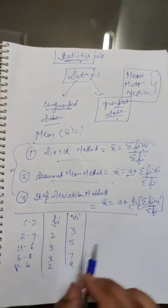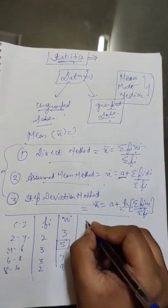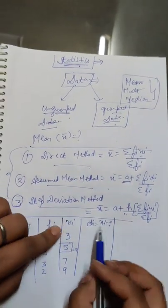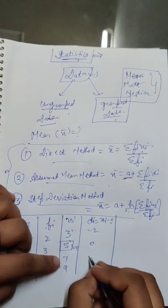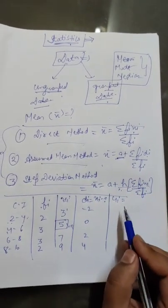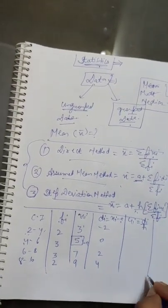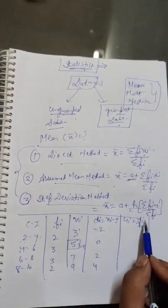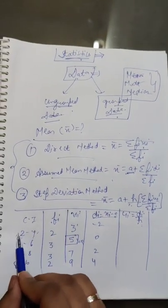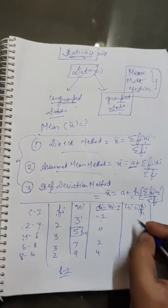We have to choose an assumed value. We will suppose the assumed value a = 5. Now we find dᵢ = xᵢ − a. So: 3 − 5 = −2, 5 − 5 = 0, 7 − 5 = 2, and 9 − 5 = 4. The class size h = upper limit − lower limit = 4 − 2 = 2.